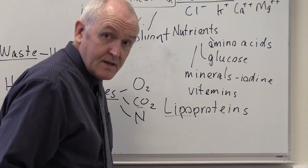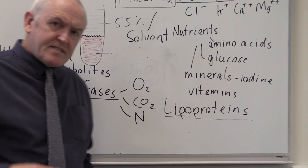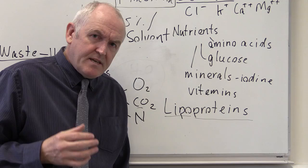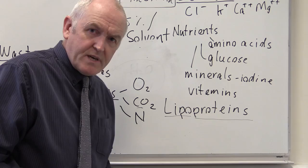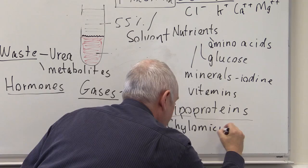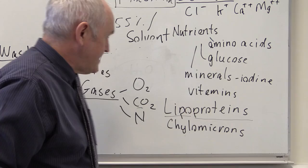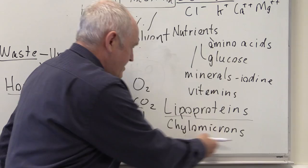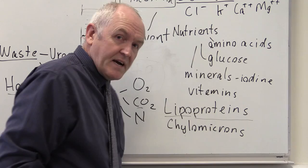Lipoproteins — 'lipo' means lipid, and 'protein' of course is protein. Fats cannot dissolve directly in the plasma, so they need to be carried by carrier molecules. From the gut, fats are absorbed into the lymphatic system in the form of chylomicrons, which go through the lymphatic system and enter the venous circulation, circulating as chylomicrons — proteins packaging up fatty molecules for transport in the blood.